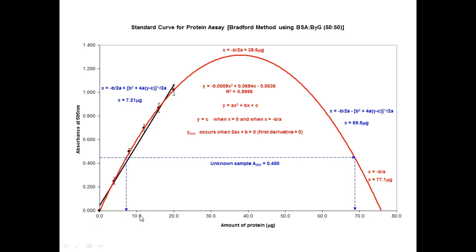That's why 77 didn't make sense — you have to think about it. If you remember algebra, there are two sides to the curve and you have to make sure you pick the correct answer.